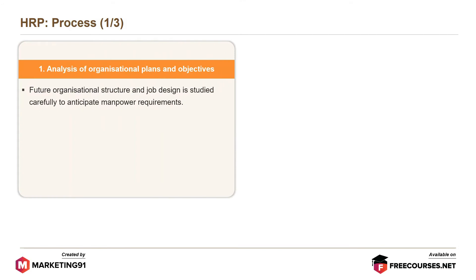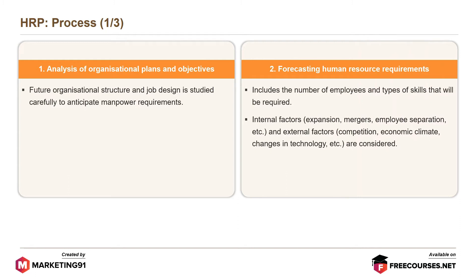The first step is analysis of organizational plans and objectives, where future organizational structure and job design is studied carefully to anticipate manpower requirements. The next step is forecasting human resource requirements, which includes the number of employees and types of skills that will be required. Internal factors like expansion, mergers, and employee separation, as well as external factors such as competition, economic climate and changes in technology are considered.